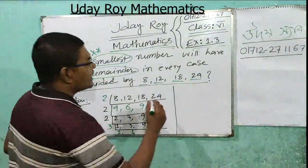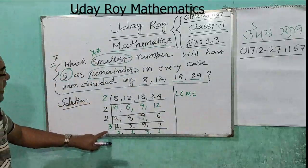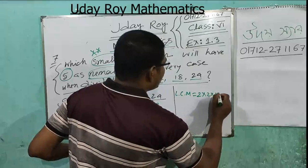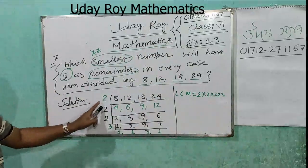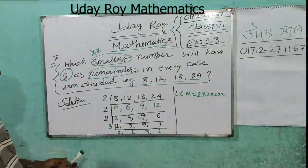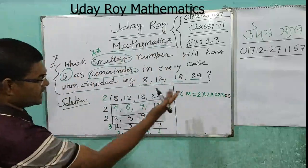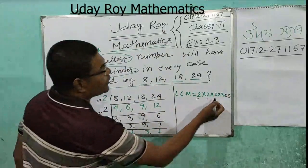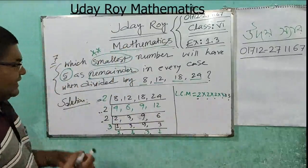So LCM equals 2 × 2 × 2 × 3 × 3. You can see: two 2s and two 3s. In your exam hall, if you want, you can use a pencil for better working.